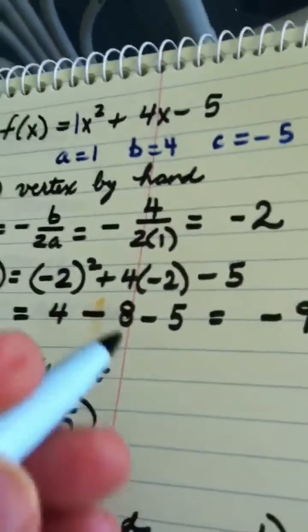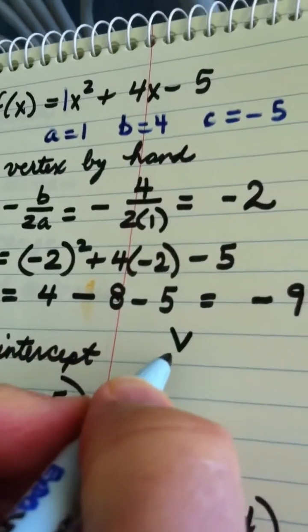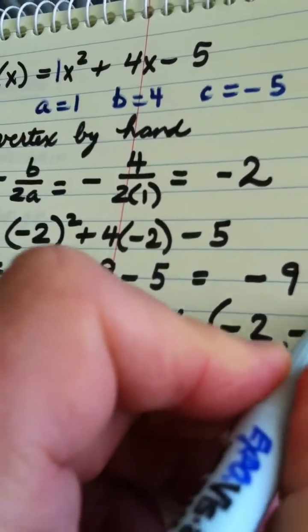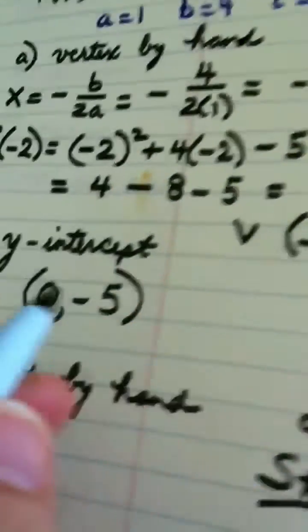So my vertex, I'll write with a V, is the ordered pair negative 2 comma negative 9.